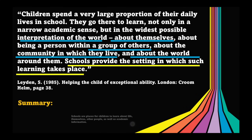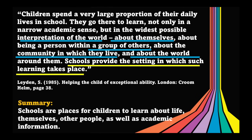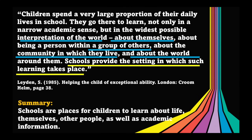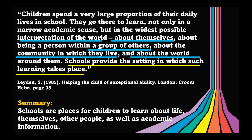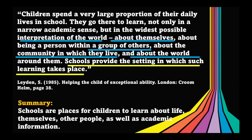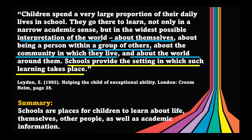Look at this example summary: 'Schools are places for children to learn about life, themselves, other people, as well as academic information.' Kasi nga, sabi doon sa paragraph, schools provide the setting — schools yung nagsisilbing lugar, so pwede mong sabihin na 'schools are places.' Tapos nilagay natin doon na 'for children to learn about life' kasi sabi niya interpretation of the world; 'themselves' kasi about themselves; 'other people' kasi about being a person within a group of others; 'as well as academic information.' Gets po ba? When you try to summarize a paragraph or a text, all you have to do first is to identify the main idea and the key points.